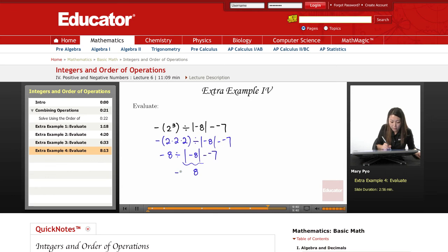So I'm going to write everything else out. Don't forget these signs. Minus a negative 7. Write everything else out exactly the way it is. So negative 8 divided by 8 minus a negative 7.